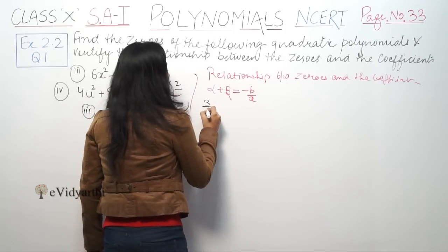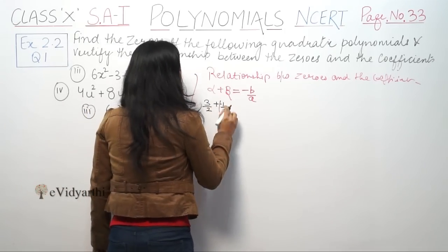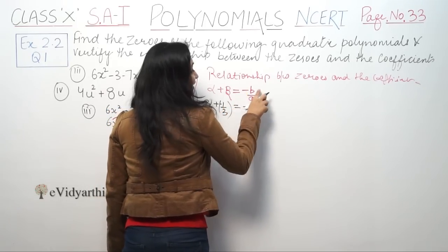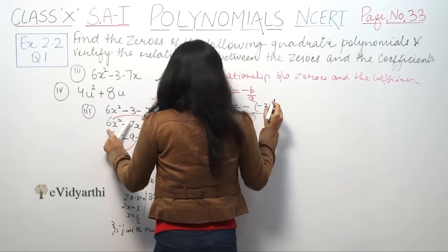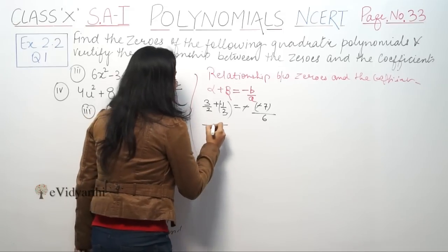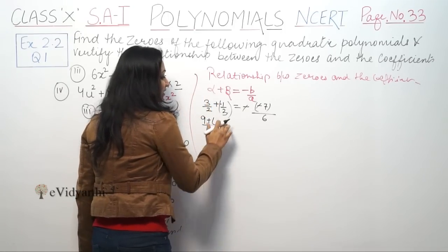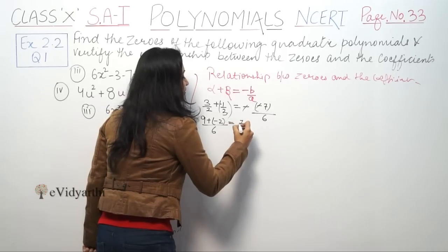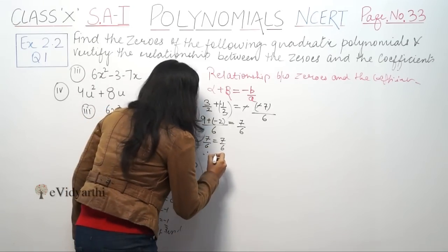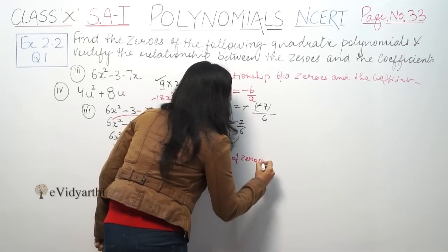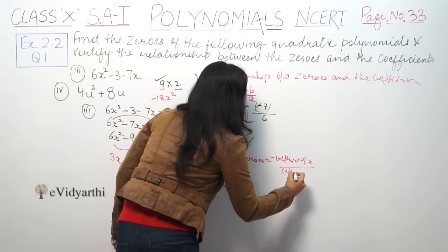So alpha plus beta: 3 by 2 plus minus 1 by 3. This equals minus b by a, where b is minus 7 and a is 6. So minus b by a equals 7 by 6. And 3 by 2 minus 1 by 3 equals 9 by 6 minus 2 by 6 equals 7 by 6. So the sum of zeros equals minus coefficient of x upon coefficient of x squared.